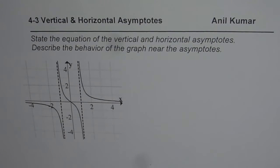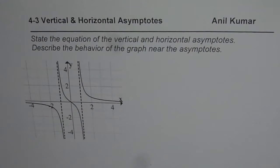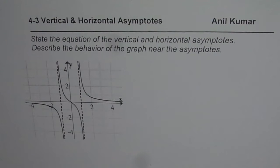I am Anil Kumar and in this unit we are going to explore how to sketch the graph of a given function. Vertical and horizontal asymptotes are very important to sketch the graph of any function, especially rational functions. We will explore these functions in this particular chapter. The question here is: state the equation of vertical and horizontal asymptotes and describe the behavior of the graph near the asymptotes.